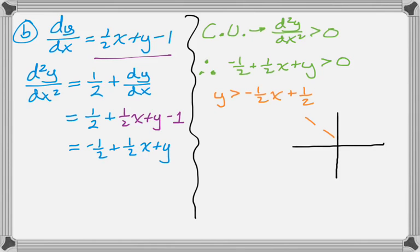And what does that mean? Well, if you do a really bad sketch and test the point 0, 0, if you plug in 0 for y and 0 for x, you get 0 is greater than 1 half. That's not true, so you want to shade the other side of the line that doesn't contain that point.